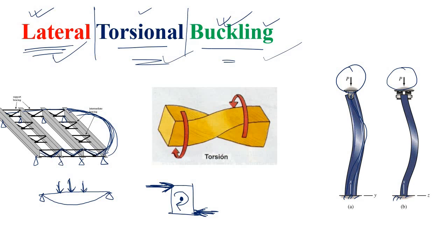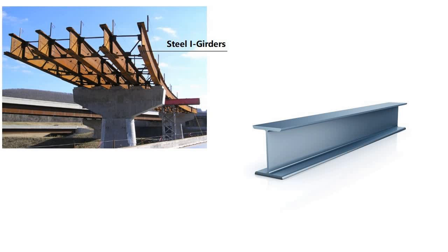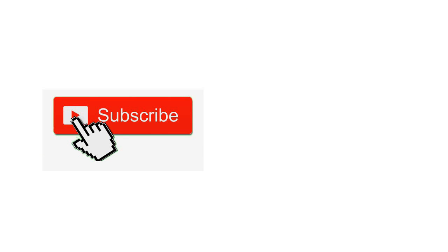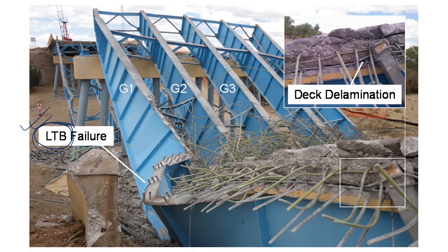Now let's discuss why lateral torsional buckling happens and what the remedies are. We will consider the steel I-girder because it is the most common type of girder used in bridge construction. At the very first slide I showed you the failure of an actual bridge, and the cause of that failure was lateral torsional buckling.